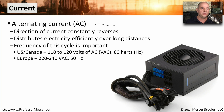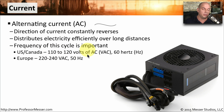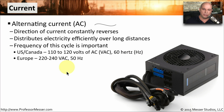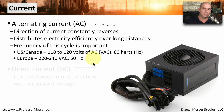The frequency used on these alternating current connections is very important when we're plugging in our computers. In the United States and Canada, we generally use 110 to 120 volts of AC, or VAC, running at a frequency of 60 hertz. In Europe it's very different — 220 to 240 volts of AC running at a frequency of 50 hertz.